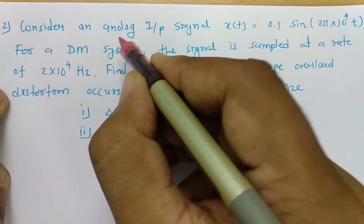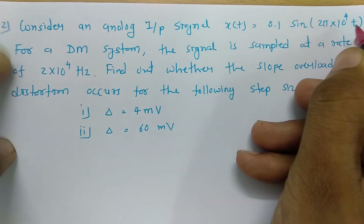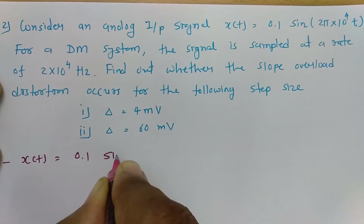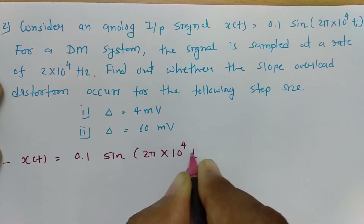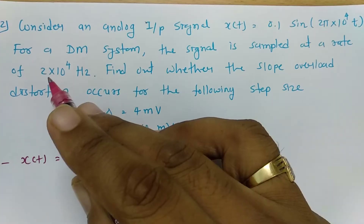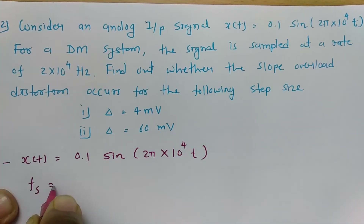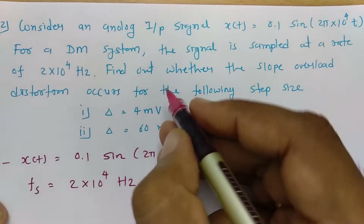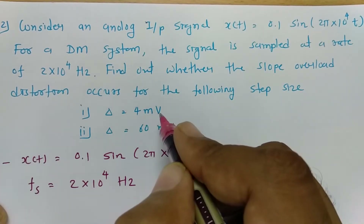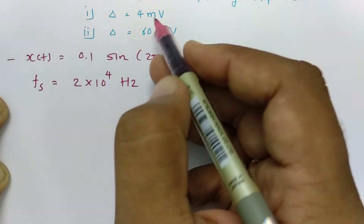In the second problem, consider an analog input signal x(t) = 0.1 sin(2π × 10⁴ t). For a delta modulation system, the signal is sampled at a rate of fs = 2 × 10⁴. We need to find out whether slope overload distortion will occur for two step sizes: delta₁ = 4 mV and delta₂ = 60 mV.